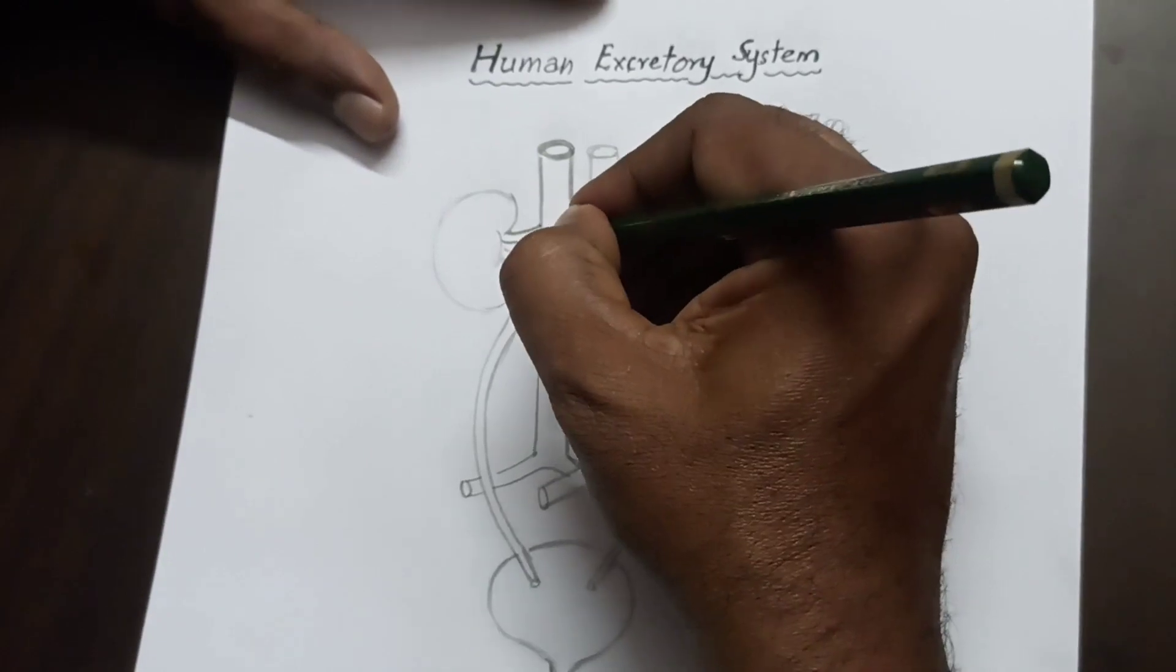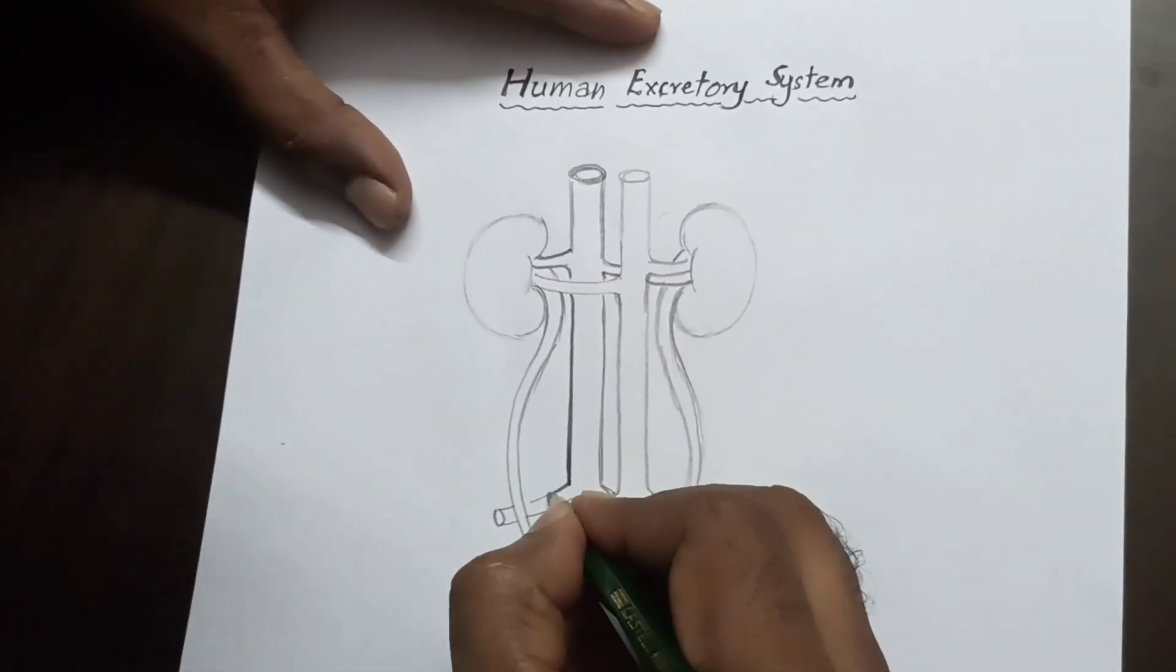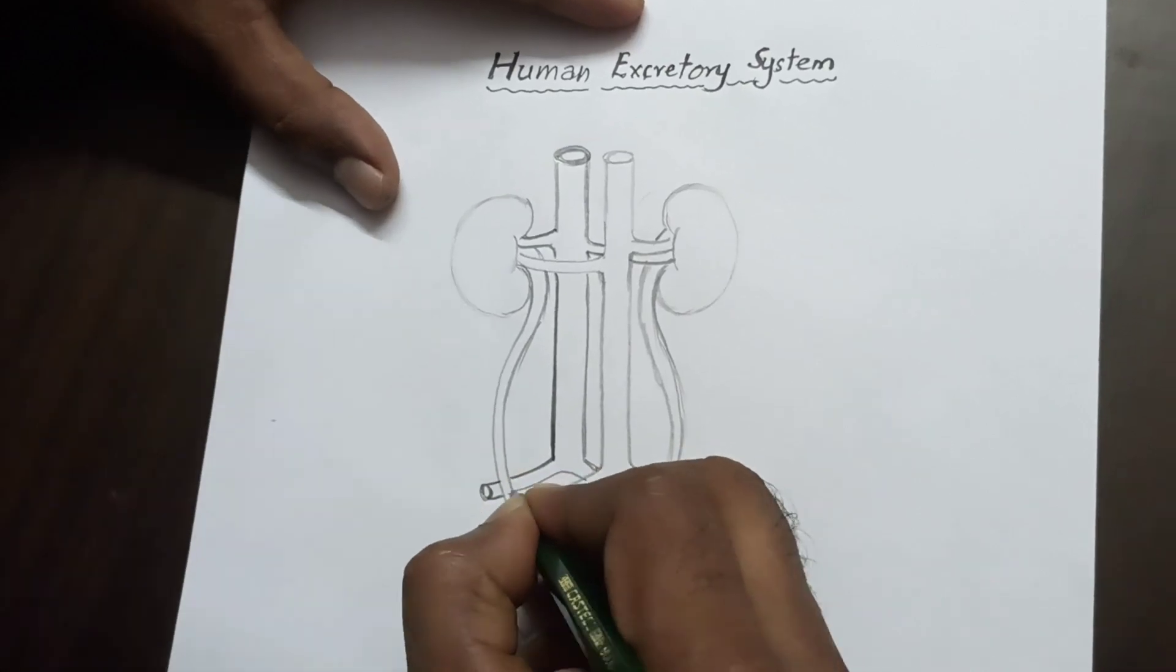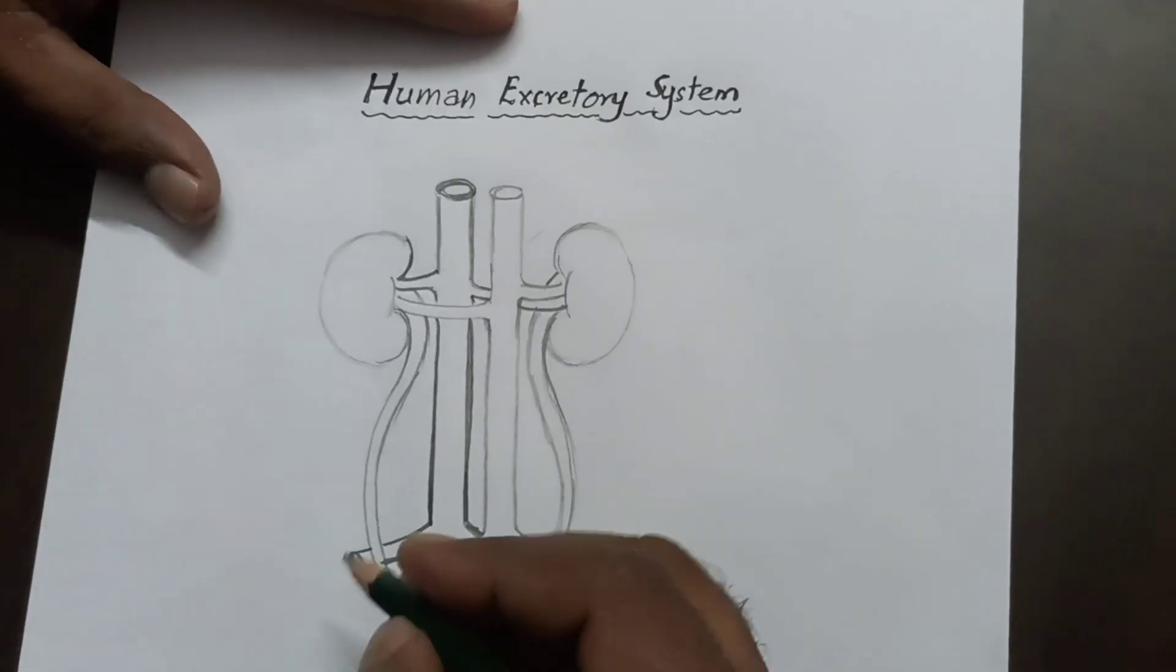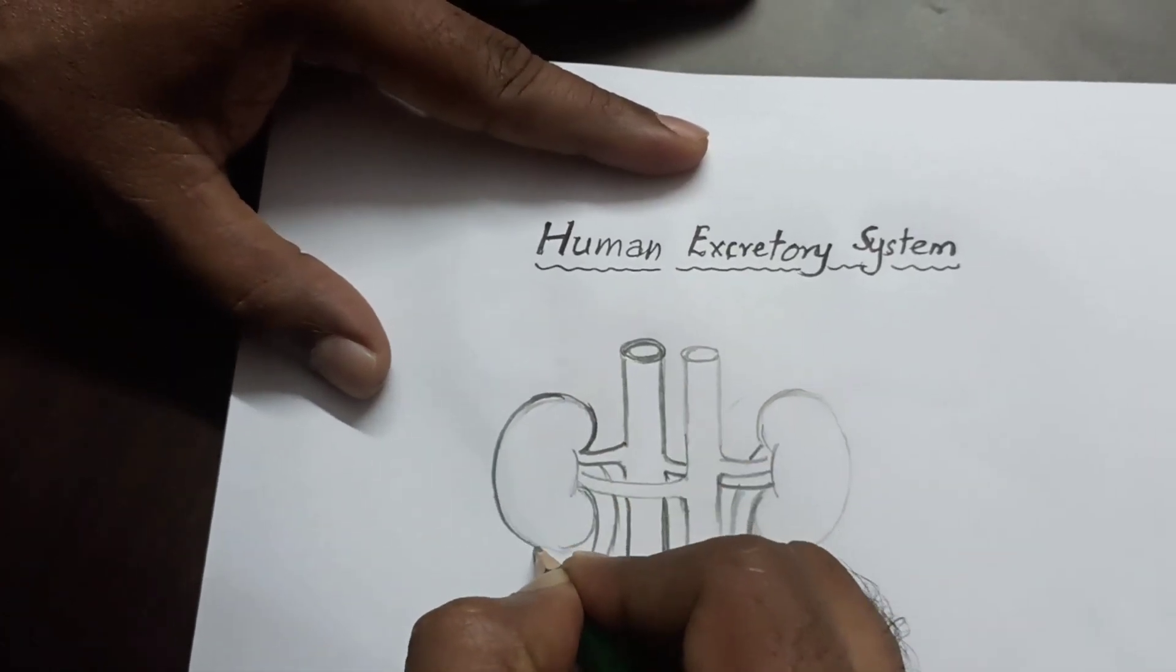We have to darken these blood vessels like this. Now I am darkening the kidneys.